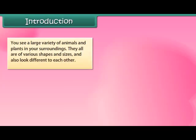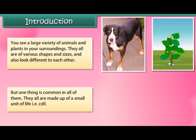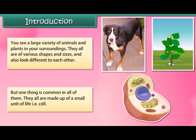You see a large variety of animals and plants in your surroundings. They all have various shapes and sizes and look different from each other, but one thing is common in all of them — they are all made up of a small unit of life, that is, the cell.